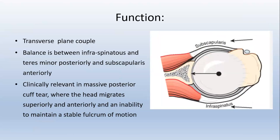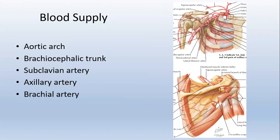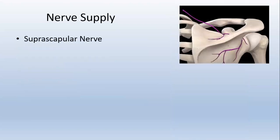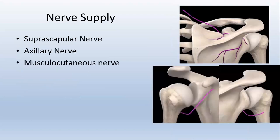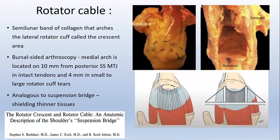Clinically, in a massive cuff tear, the humeral head migrates superiorly and anteriorly, with inability to maintain a stable fulcrum of motion. Blood supply is from the aortic arch, brachiocephalic trunk, subclavian artery, axillary artery, and brachial artery. Nerve supply is from the suprascapular nerve, axillary nerve, and musculocutaneous nerve. The rotator cable is a semilunar band of collagen that arches over the lateral rotator crescent area. In bursal-sided arthroscopy, the medial arch is located just 10 mm from the posterior supraspinatus musculotendinous junction in intact tendons, whereas in large to massive cuff tears it is about 4 mm. It is analogous to a suspension bridge, shielding the thinner tissue.